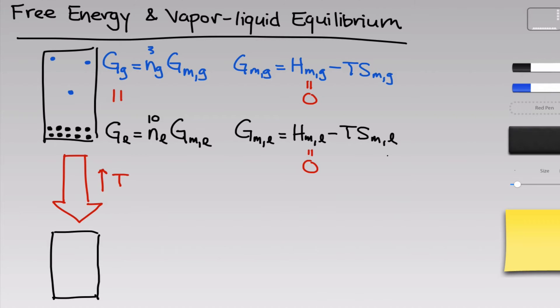If we think about our intuitions for entropy, which phase will have the higher entropy — the gas or the liquid? Hopefully you came to the conclusion that the molar entropy of the gas will be much, much greater than the molar entropy of the liquid phase. This is because it's a more dispersed phase, or a less condensed phase — the gas is much more dispersed than the liquid. As the temperature increases, what happens to the free energy of each phase? Let's look at this on a graph.